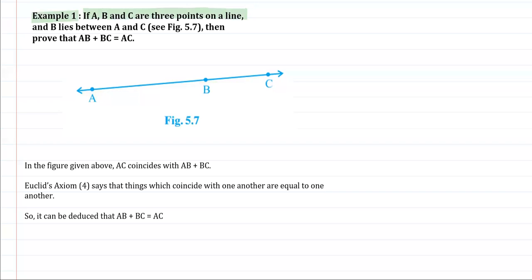Moreover, it is also given that point B lies between A and C. We have to prove that AB plus BC will be equal to the length AC.